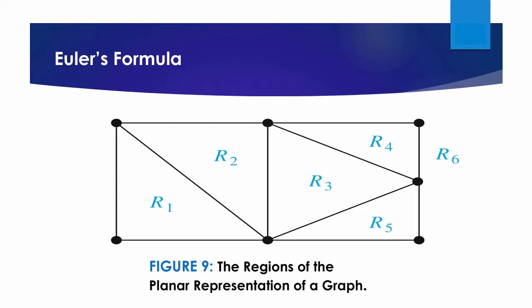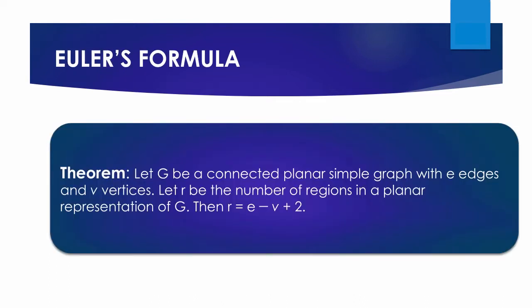Euler showed that all planar representations of a graph split the plane into the same number of regions. He accomplished this by finding a relationship among the number of regions, the number of vertices, and the number of edges of a planar graph. This leads to the following theorem: Let G be a connected planar simple graph with E edges and V vertices, and let R be the number of regions in a planar representation of G. Then R = E − V + 2.